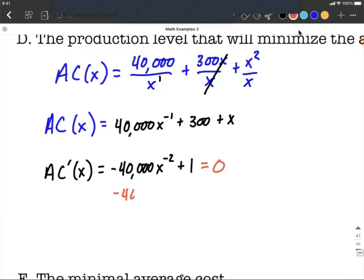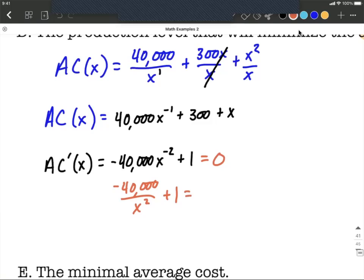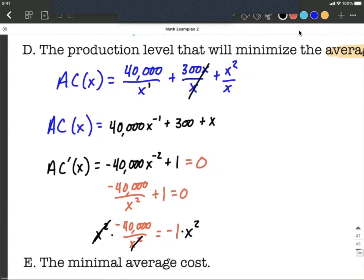Let's rewrite that with a positive exponent, so we can say the x² goes back to the denominator, make it a positive exponent, plus 1, and because this is equal to zero I'm going to subtract the 1, move that to the other side. So we get negative 1 on the right-hand side. I'm going to multiply both sides by x² because we can't solve for x while it's in the denominator.